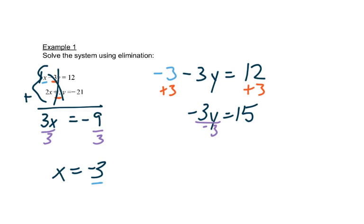And then we'll divide both sides by negative 3. And we get y is negative 5. So our answer here is negative 3, negative 5, x, comma, y.